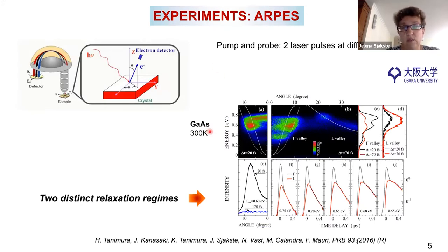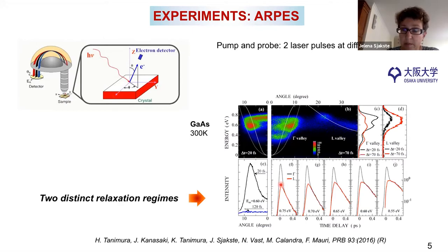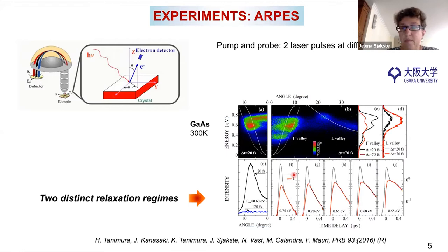Here is the case of gallium arsenide from this work. You see the electrons excited into the gamma valley, and then at a time a little bit after, you can see that these electrons have lost some of their energy and some have transferred to another valley. In those experiments, it was possible to identify two very distinct relaxation regimes, both related to electron-phonon coupling. On the intensity maps, first the intensity goes down very quickly — this is the very fast initial relaxation — and then there is a slower regime. Interestingly, the slower regime is the same for the gamma and for the L valleys.